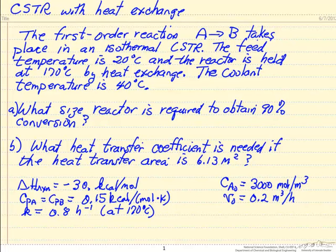In this example we're going to look at a continuous stirred tank reactor that's run isothermally by having heat exchange. It's a first-order reaction. We're given a feed temperature, and then the reactor is at a higher temperature because it's an exothermic reaction.